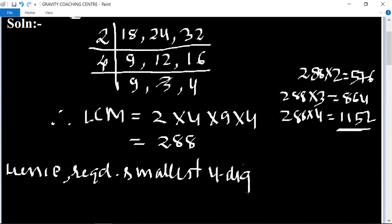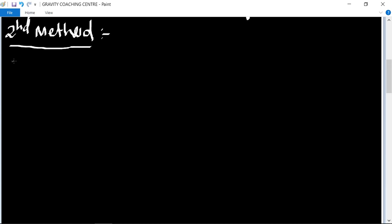Second method: the smallest four-digit number equals 1000. Now we will divide 1000 by 288.